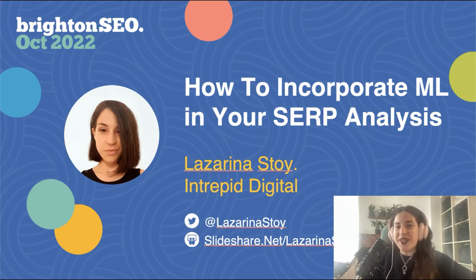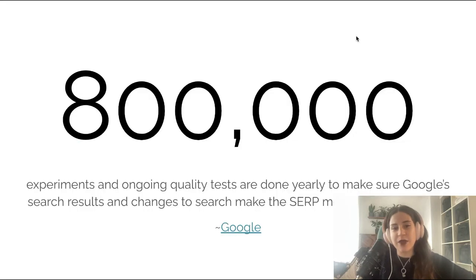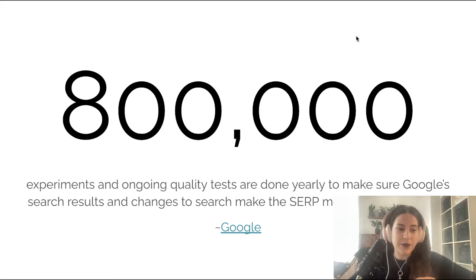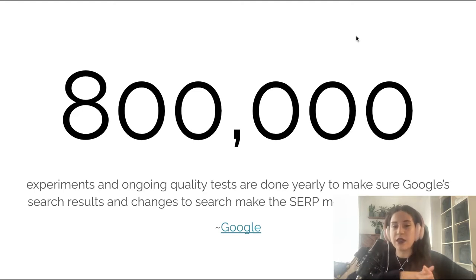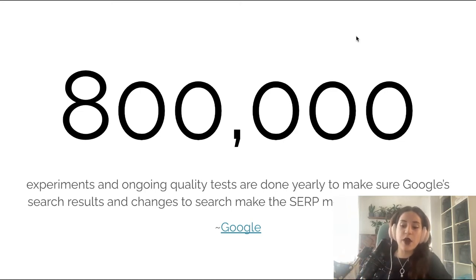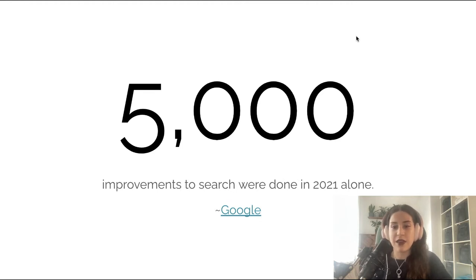So we're going to talk about how to incorporate machine learning in your SERP analysis. The first thing I want to start with are the three big numbers that really impressed me when I was doing research for this talk. There are 800,000 experiments and ongoing quality tests that Google does yearly to ensure that search results and changes made to the SERP are relevant to users and are what the user wants. From these tests, just about 5,000 improvements are made to SERPs every year.